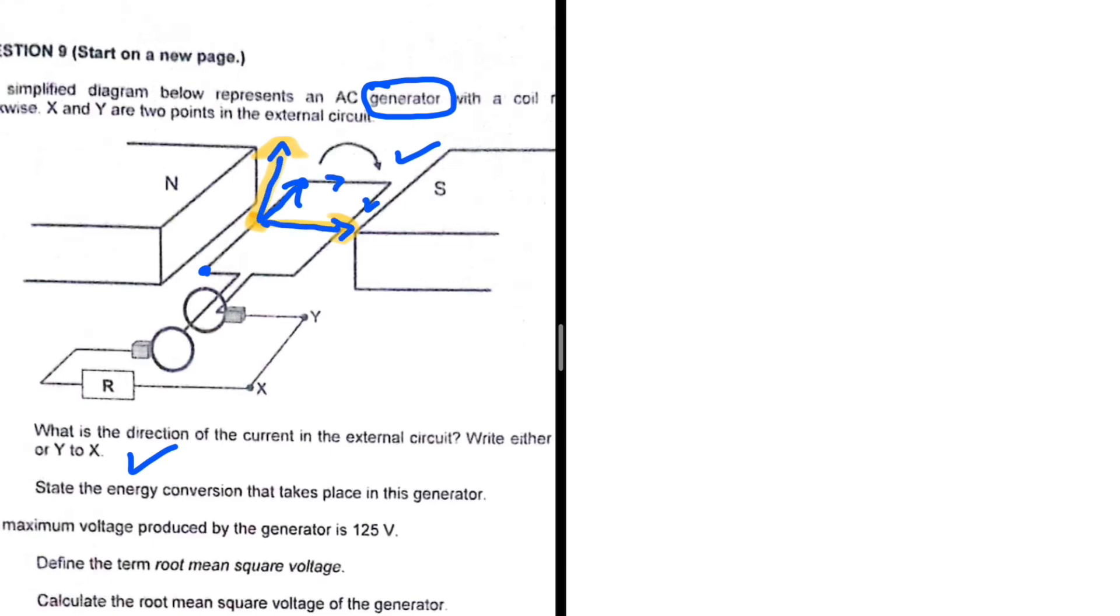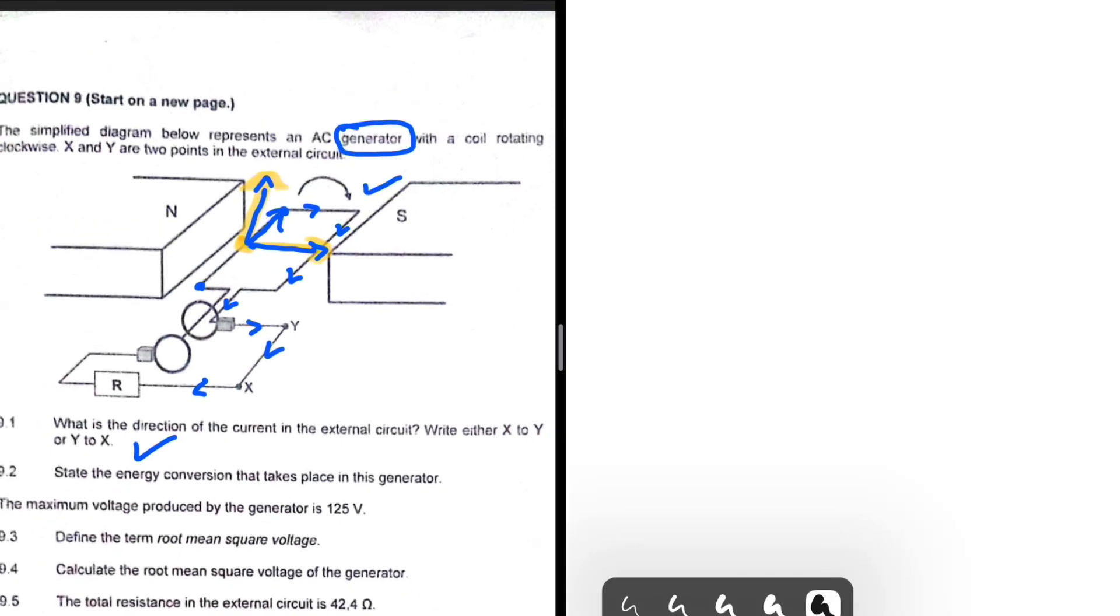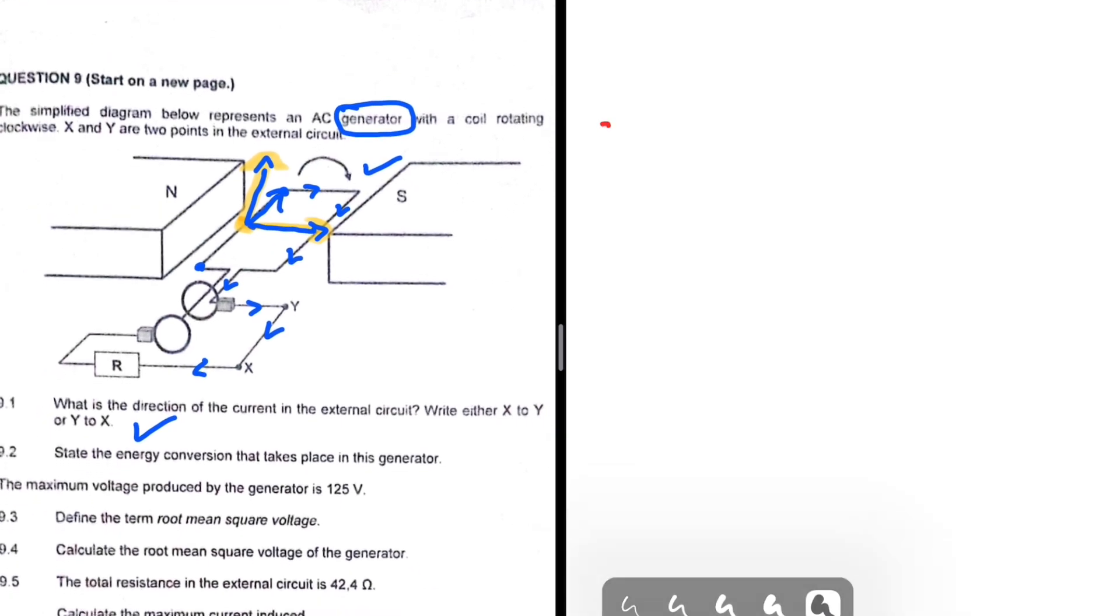Take a look at how the current flows—flows in this manner. And as you can see, when we get to our external circuit, it is flowing from Y to X. So the answer to 9.1, we have Y to X.